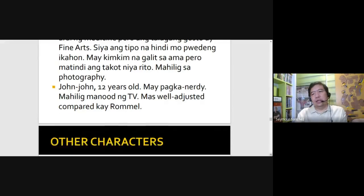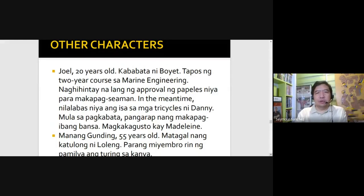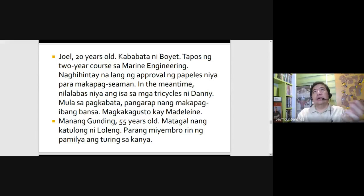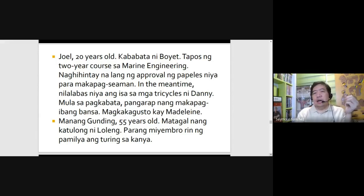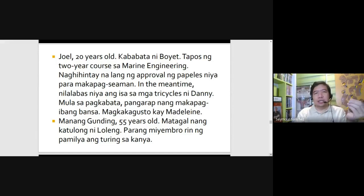He's inclined into photography. And then you have a younger brother, John John, 12 years old, nerdy, wants to watch TV a lot, well-adjusted to the family. And then you have other characters: Joel, played by Dominic Ochoa, who graduated with a two-year course in marine engineering and is waiting for his documents to be approved. He'll fall in love with Madeleine, the daughter from the US. And then you have Manang Gunding, 55 years old, the house help. During the inciting incident, Lolling will keep on asking Manang Gunding to add more salt to their food because she can't taste it — that's when they found out that Lolling has Alzheimer's disease.